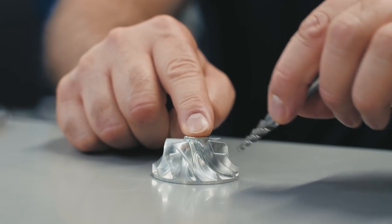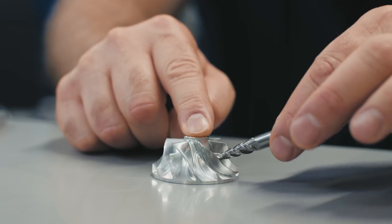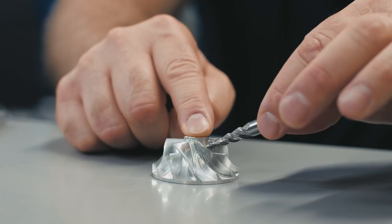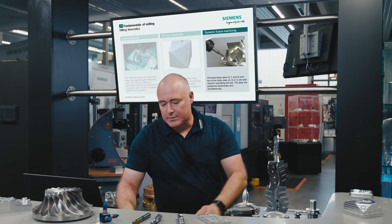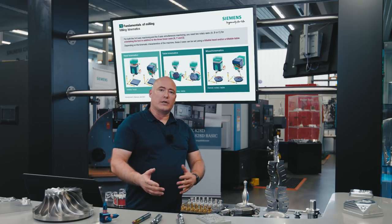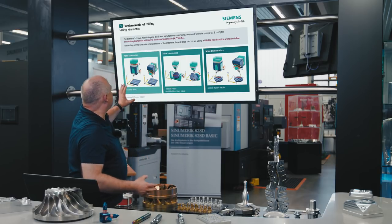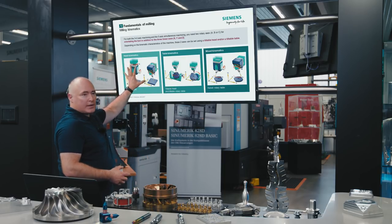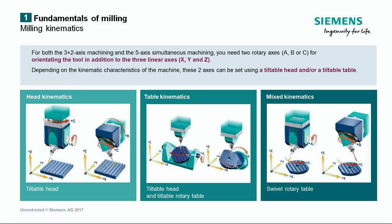Five-axis simultaneous machining is required to produce such a part. The machine needs to have certain kinematic features in order to handle the two additional rotary axis movements. These are head kinematics, table kinematics, or mixed kinematics. In our practical example, the machine features table kinematics.